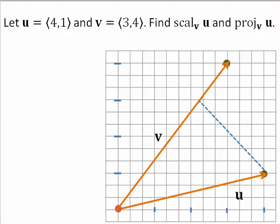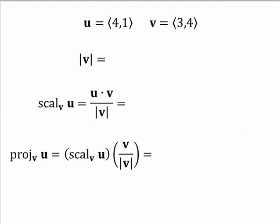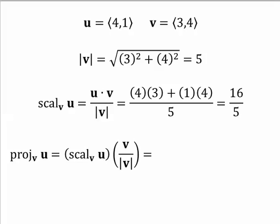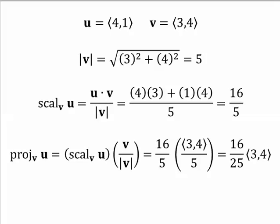Let u be the vector 4, 1 and v be the vector 3, 4. Let's find the scalar component of u onto v and the projection of u onto v. We use the formula: the scalar component of u onto v equals u dot v divided by the magnitude of v. The magnitude of v is equal to 5. The scalar component of u onto v is equal to 16 over 5. The projection of u onto v is equal to 16 over 25 times the vector 3, 4.